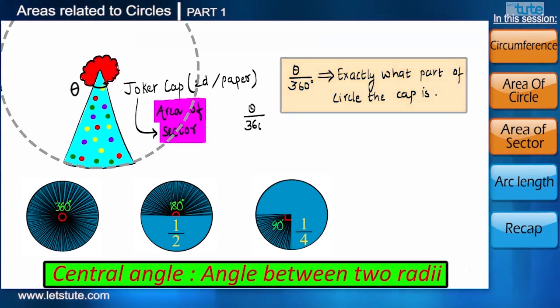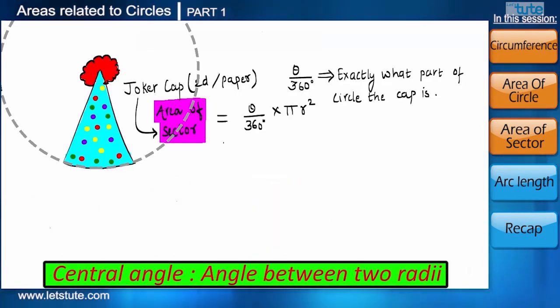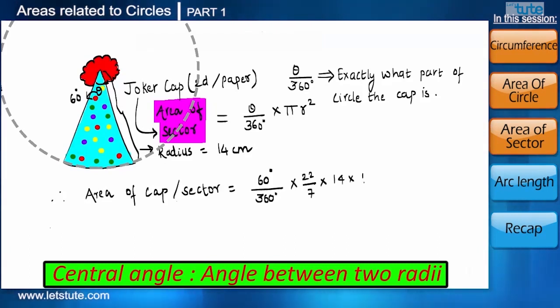Now when we multiply this ratio with the area of a circle, we will come to know that what area of the circle the cap is covering. And as we know that cap is the shape of a sector. Using this method, we can find out area of any sector of a circle when we know θ and the radius of the circle. Now suppose the central angle of the cap is 60 degrees and radius as 14 centimeter. So the area of the cap or the area of the sector will come to 102.67 centimeter square.